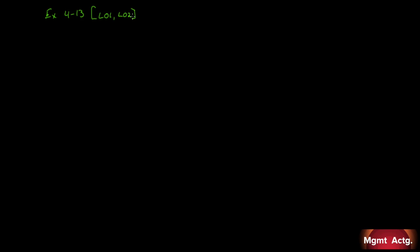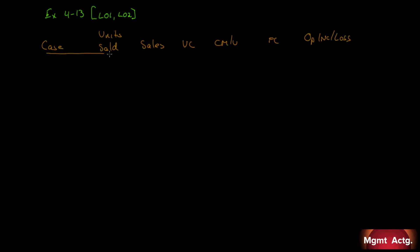Part A and Part B. Part A assumes only one product is being sold in each of the following four cases. We have columns for: units sold, sales, variable costs, contribution margin per unit, fixed costs, and operating income or loss. I'll put known data in white and fill in the missing amounts in red.